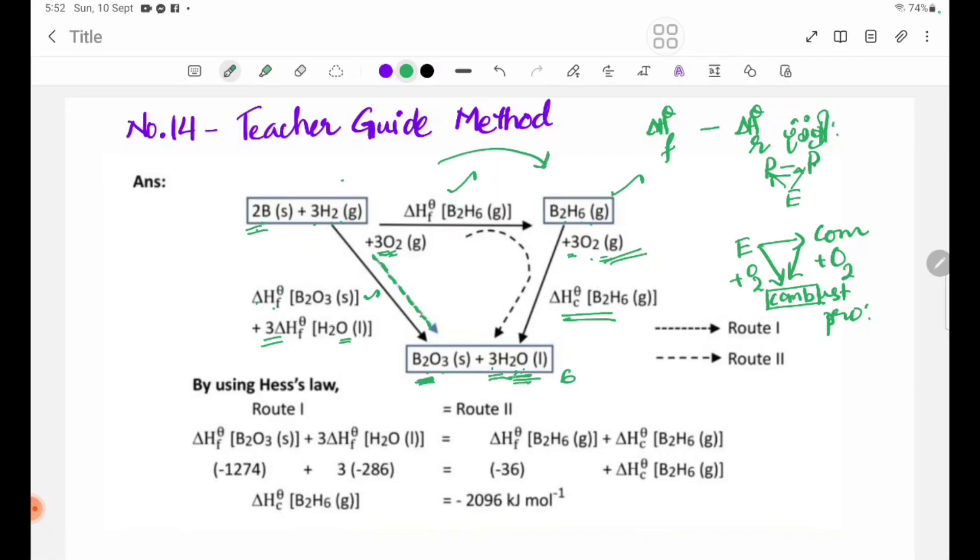The compound B2H6 undergoes combustion to form B2O3 plus 3H2O. The route equals delta H formation B2O3 plus delta H formation H2O. For B2H6, delta H formation is -36 kJ/mol.